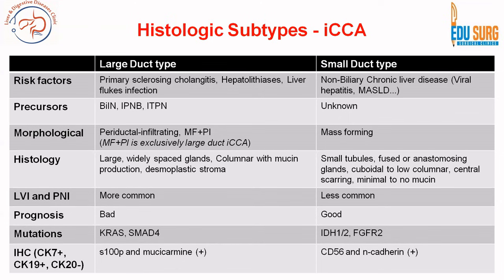Large duct versus small duct disease is now the subject of many studies because of differing mutations: KRAS and SMAD4 in large duct type versus IDH1 and FGFR2 in small duct type. IDH and FGFR are targets for targeted therapy, which is why small duct type has better prognosis than large duct type. Risk factors for large duct type are primary sclerosing cholangitis, hepatolithiasis, and liver flukes, whereas small duct type is more commonly associated with non-biliary cirrhosis due to viral hepatitis or MASLD. Precursor lesions are more common in large duct type, which will have a periductal infiltrating component with large duct thickening visible on imaging.